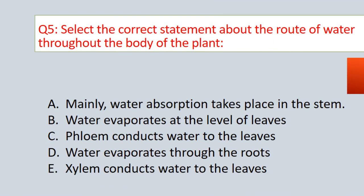Question No. 5. Select the correct statement about the route of water throughout the body of the plant. Options are: A. Water absorption takes place in the stem. B. Water evaporates at the level of leaves. C. Phloem conducts water to the leaves. D. Water evaporates through the roots. E. Xylem conducts water to the leaves.